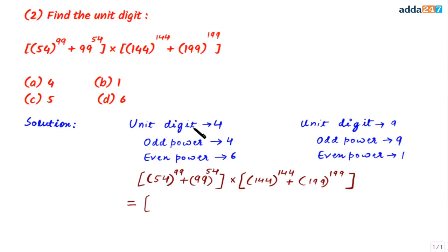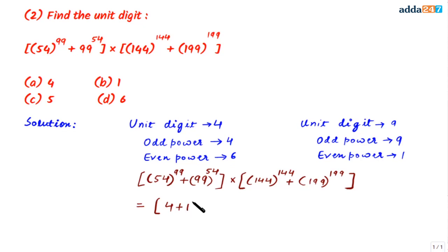The first number is 54 — units digit is 4, power is 99 which is odd — so the units digit in the result is 4. Next, 99 has units digit 9 and an even power, so the units digit is 1. Then we have a number with units digit 4 and an even power, giving units digit 6. And a number with units digit 9 and an odd power, giving units digit 9.